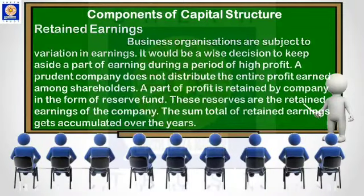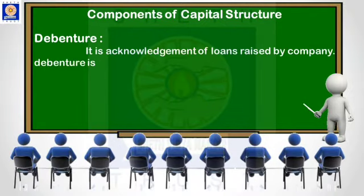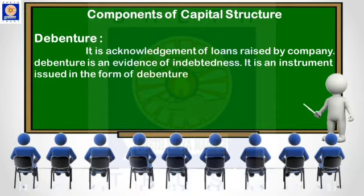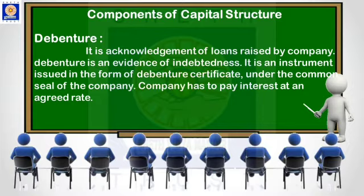Now let us see borrowed capital. The first type of borrowed capital is debentures. A person who invests in debenture capital is called a debenture holder. This debenture holder receives a debenture certificate as an acknowledgement that they have purchased the debentures of the company. In return, they receive a fixed rate of interest. There are also some types of debentures, and more features will be covered in the second chapter on sources of finance.